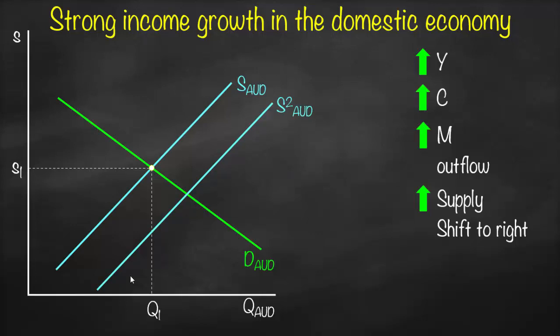The new supply curve is labeled S2-AUD. Looking at the point of intersection between the new supply curve and the demand curve, we go down to get the equilibrium quantity and move horizontally to get the equilibrium exchange rate. Remember, we use indirect quotation, so the value of the currency goes down. A lower exchange rate means Australian dollar depreciation.